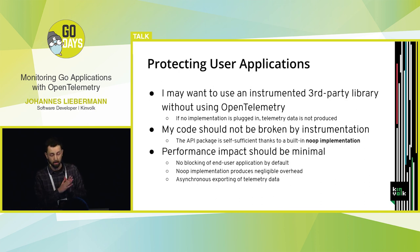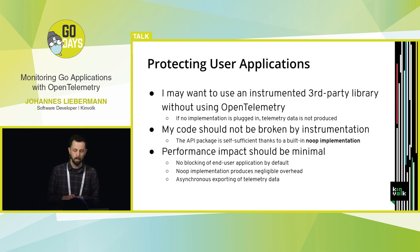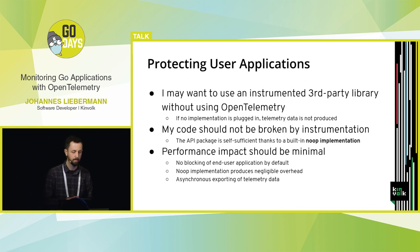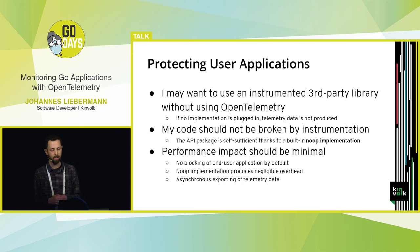The OpenTelemetry design is empathic to user code. You don't have to use tracing if you don't want to. Even if you're importing some generic library that is instrumented, you don't have to enable tracing — your code will compile anyway, and performance impact is reduced to a minimum by not blocking as far as possible. The no-op implementation is very lightweight, and we ship metrics data synchronously to the backend.